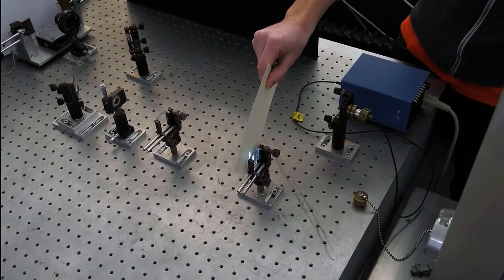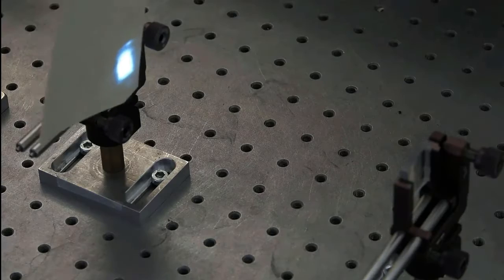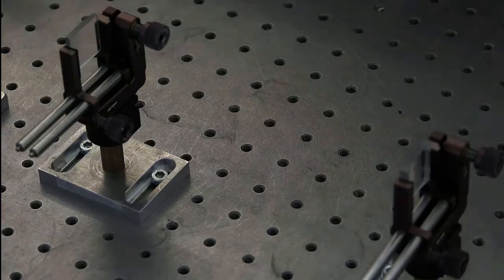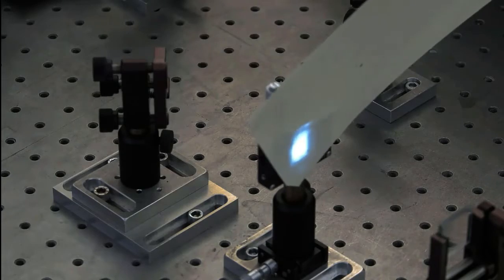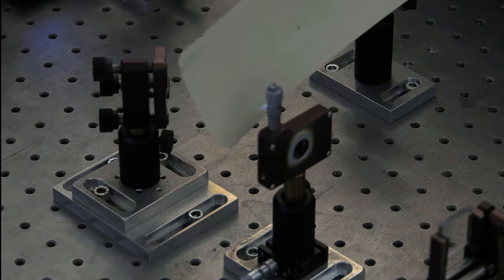Now we see the beam of the XIMA laser, made visible by a piece of paper. Fun fact, the paper fluoresces blue because of the UV light. Let's check the beam path.